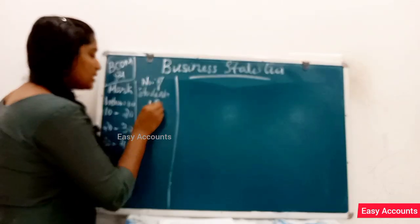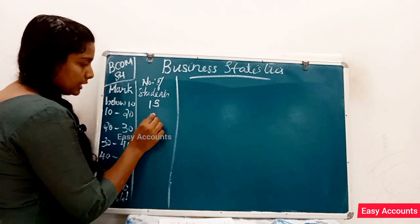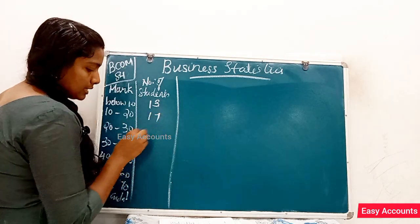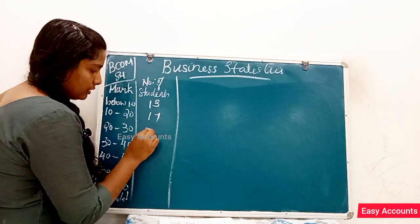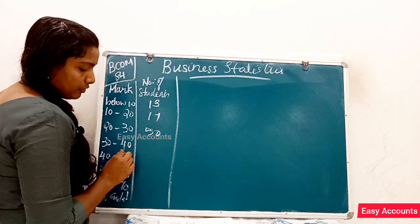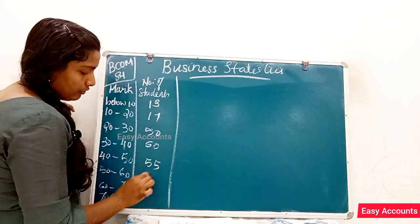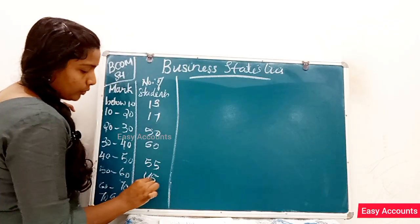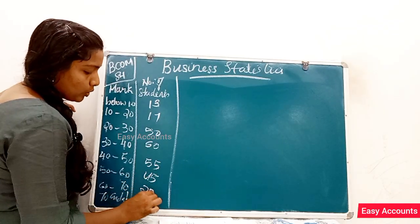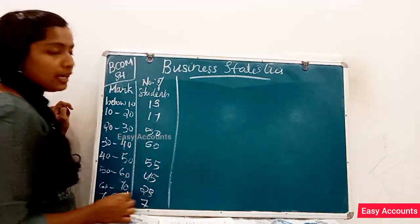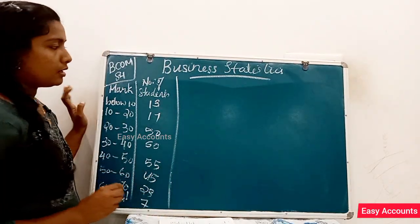Number of students: 13, 17, 50, 60, 55, 45, 23, 7. That is the question.